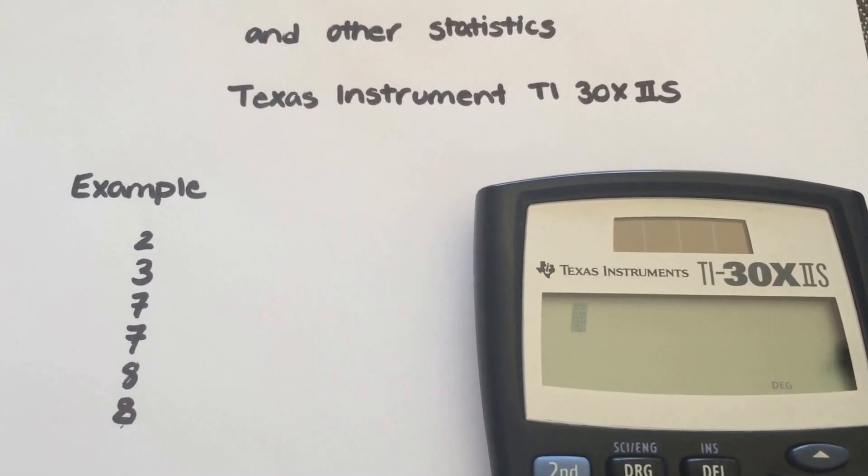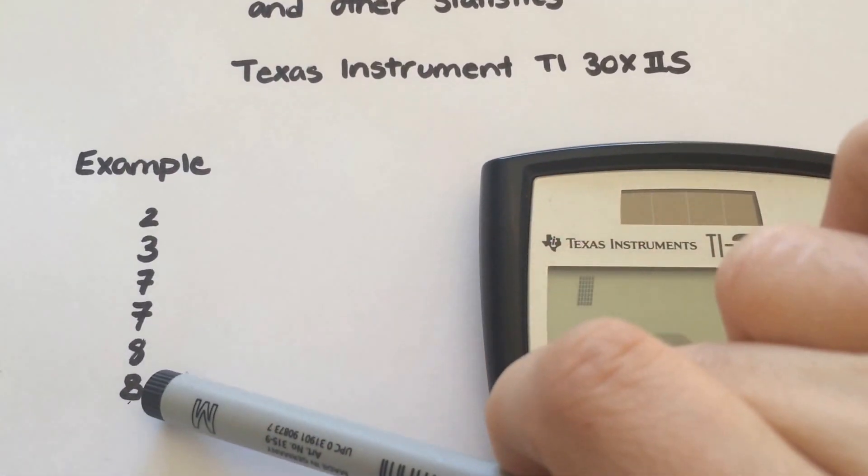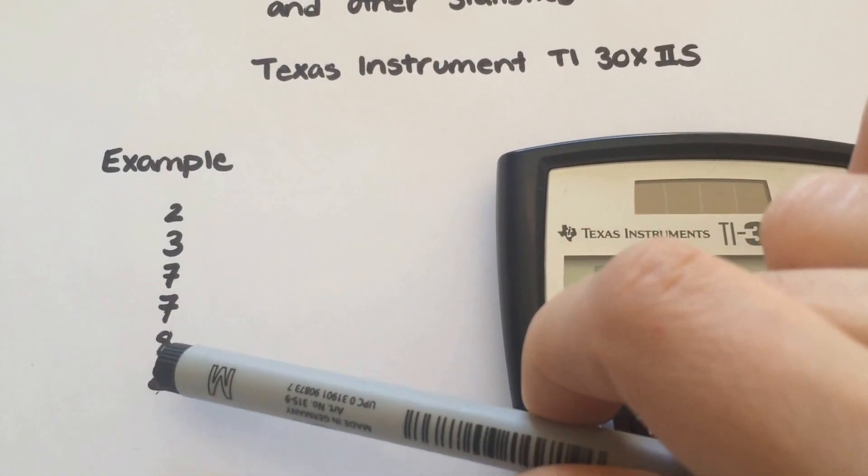The example I'm going to show you is with this data here: 2, 3, 7, 7, 8, and 8.